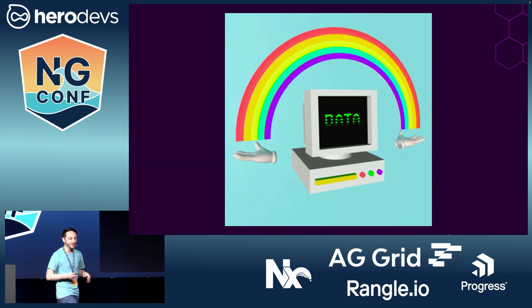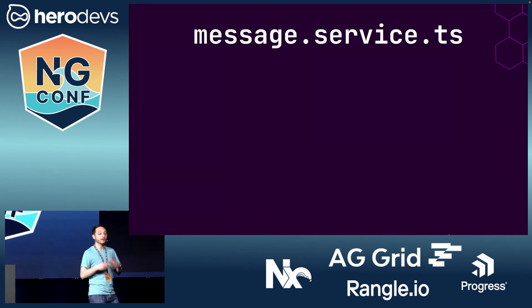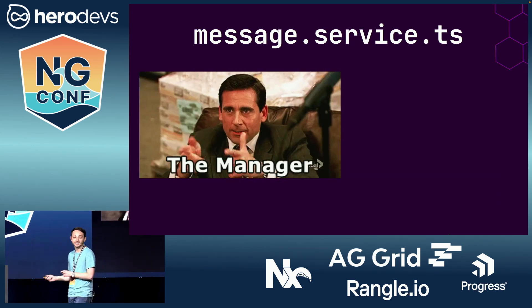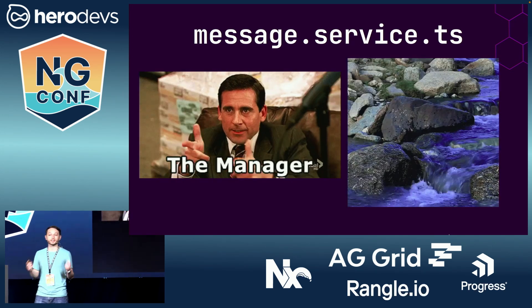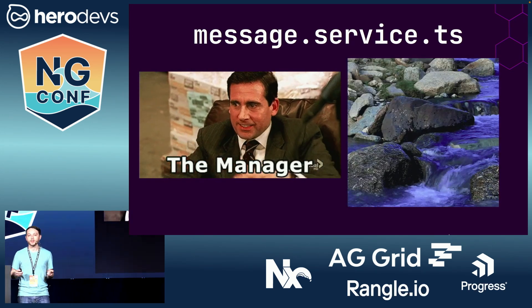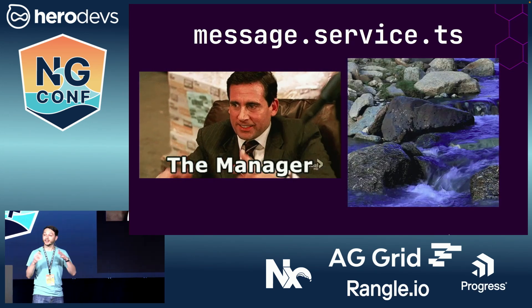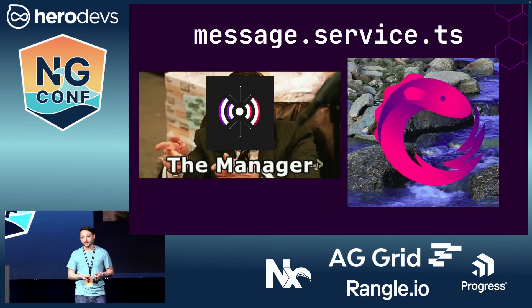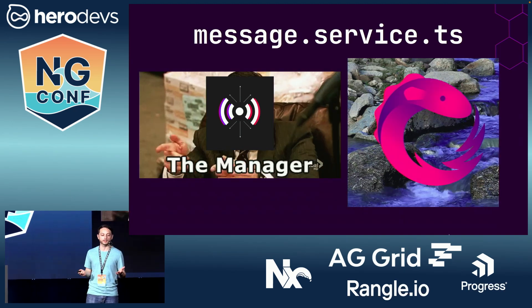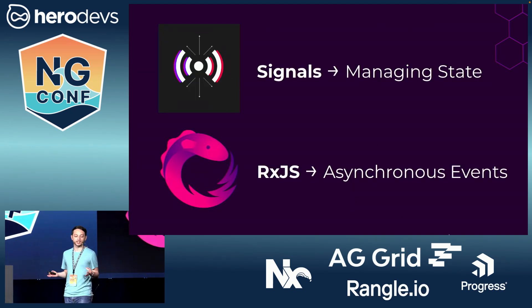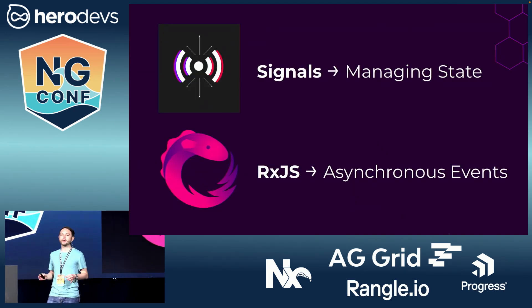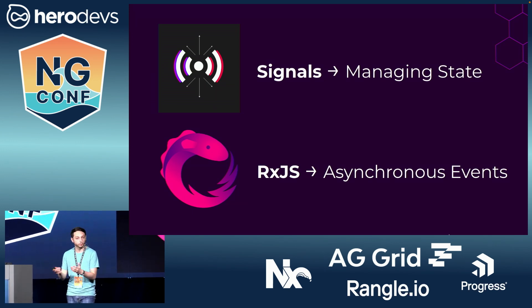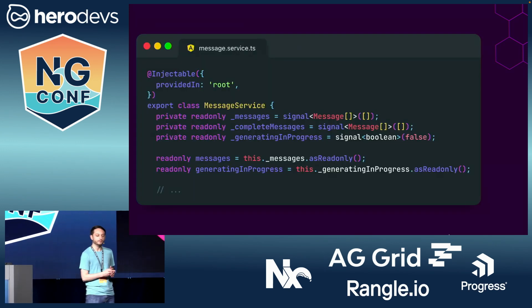Now on to the data side of things. Our custom message service is responsible for both managing state and real-time data streaming. We do this using a combination of both signals and RxJS observable streams. Signals are great for managing state, but RxJS is perfect for asynchronous events like this real-time data.